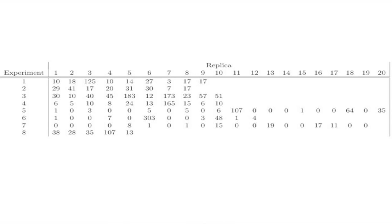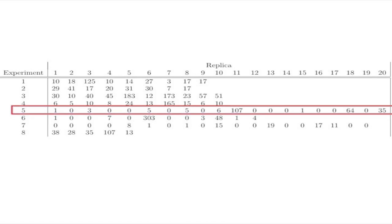I want to focus your attention just on one of the rows. This is an experiment in which experimentalists took a bacterial culture, exposed it to something, and these are the number of colonies that somehow made it — they counted this number of colonies. Who amongst the students has ever gotten an experiment like this? We've got a bunch of zeros, a hundred — things are all over the place. And do you like showing this to your advisor? No.